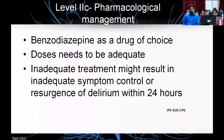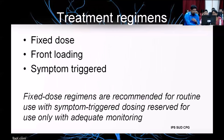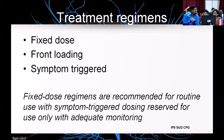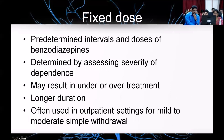Since benzodiazepines are established as drug of choice, inadequate treatment might result in delirium worsening over the next 24 hours. There are three treatment regimens: fixed dose, front-loading, and symptom-triggered. The IPS guidelines recommend fixed dose regimens for routine use, with symptom-triggered dosing reserved for adequate monitoring settings. Symptom-triggered regimens tend to be the best overall but are resource-intensive. Fixed dose regimens use predetermined intervals and doses determined by assessing severity of dependence — they may result in under- or over-treatment and tend to have slightly longer treatment durations. They are often used in outpatient settings for mild to moderate withdrawal.